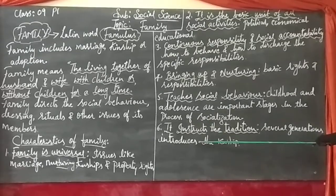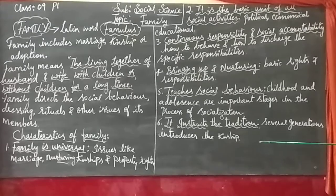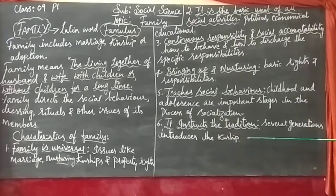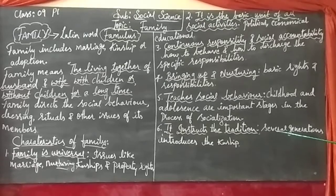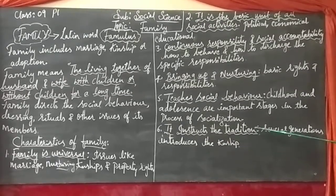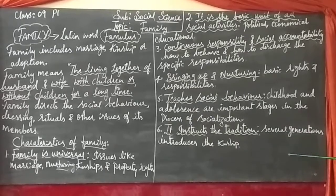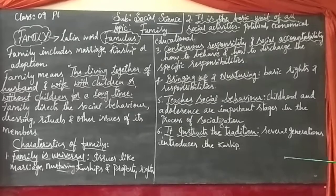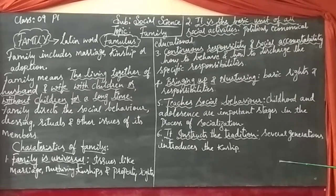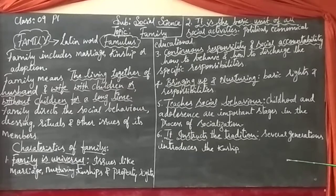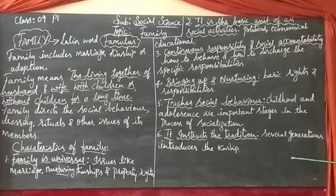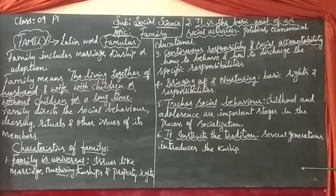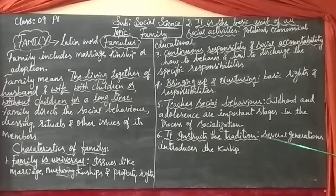The sixth characteristic: It instructs the tradition. Several generations introduce the kinship continuation from one generation to another through blood relationships. Your grandparents are the first generation, your parents are the second, and children are the third generation. The family of father, mother, and children is called the second generation. A family that includes grandparents, parents, and children is called the third generation.